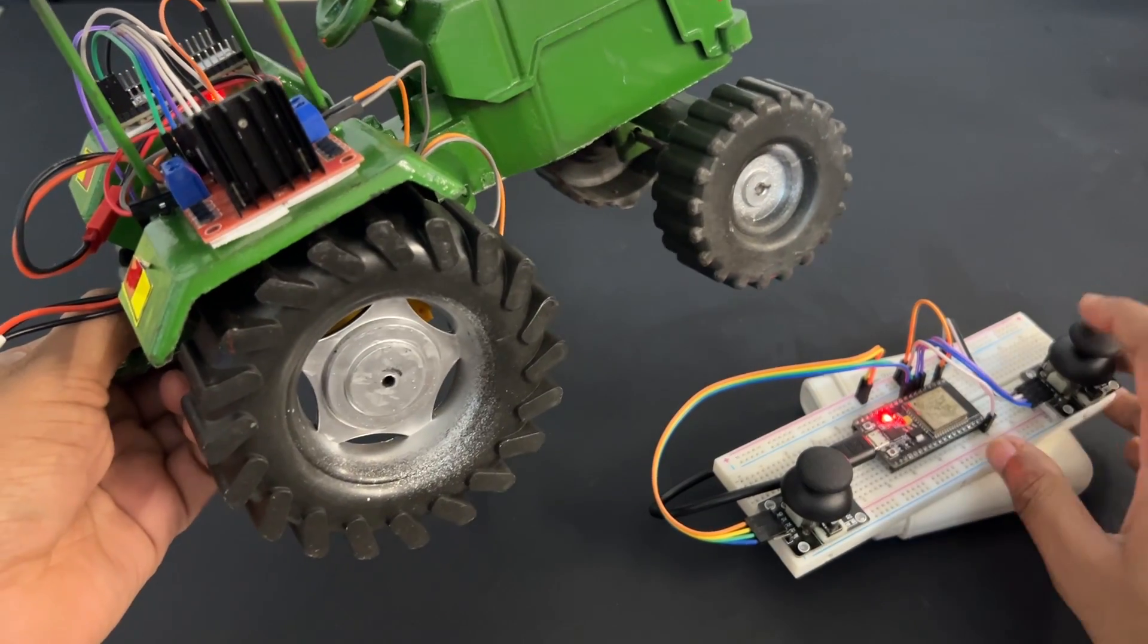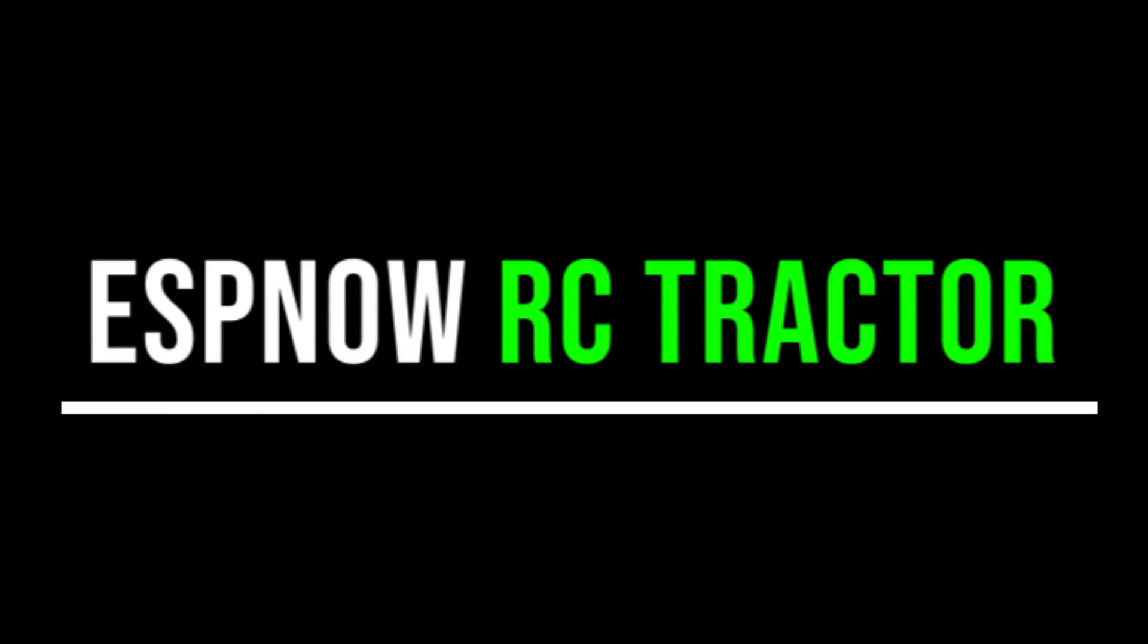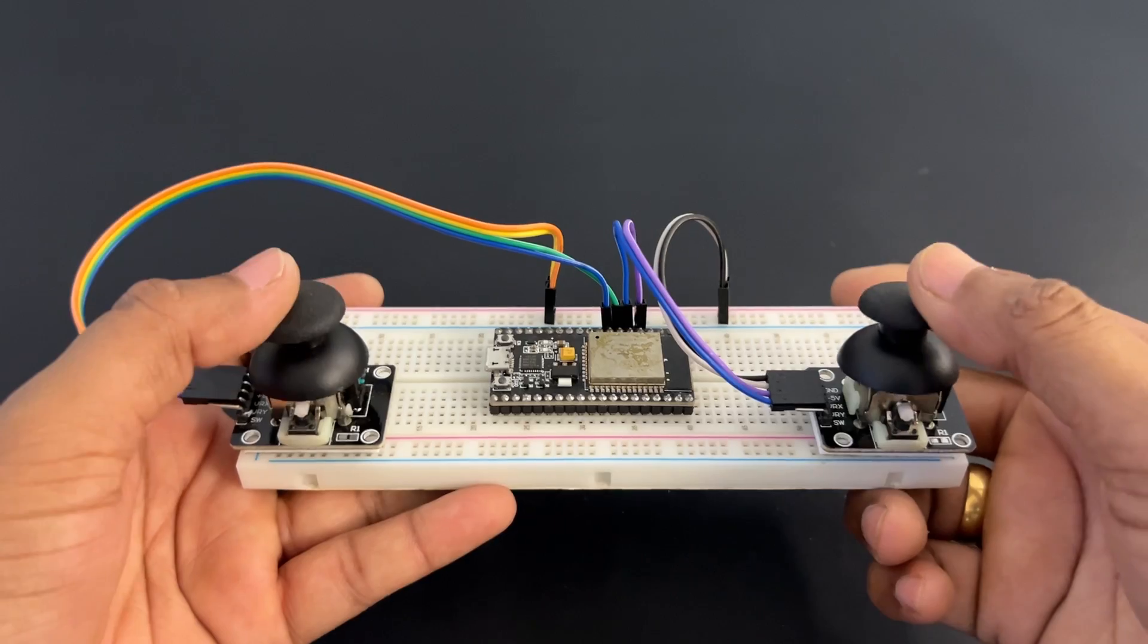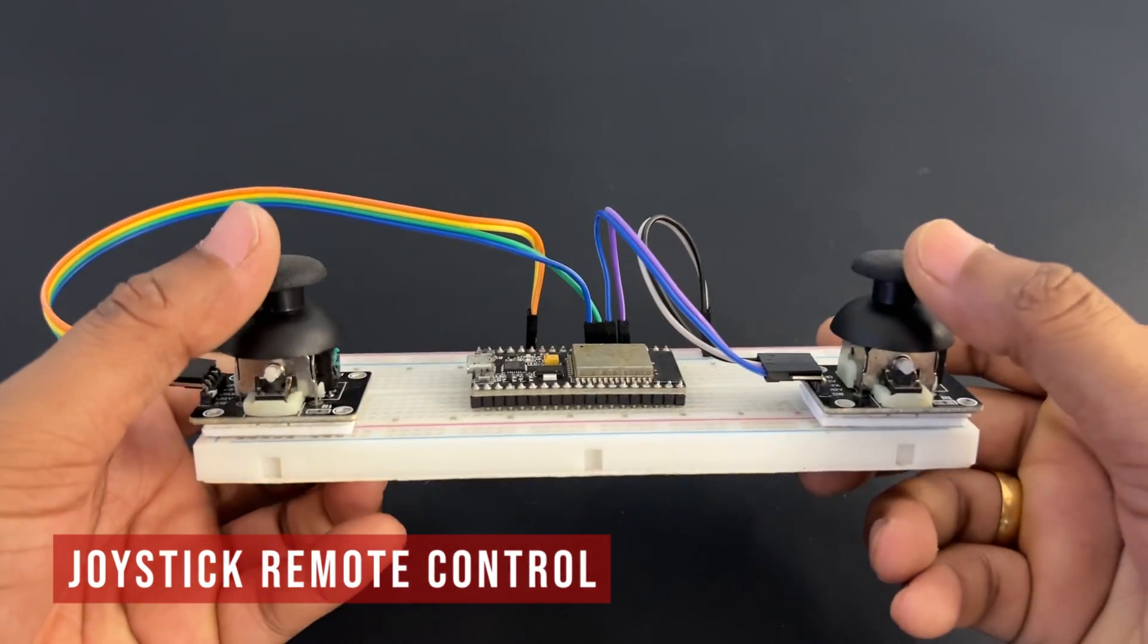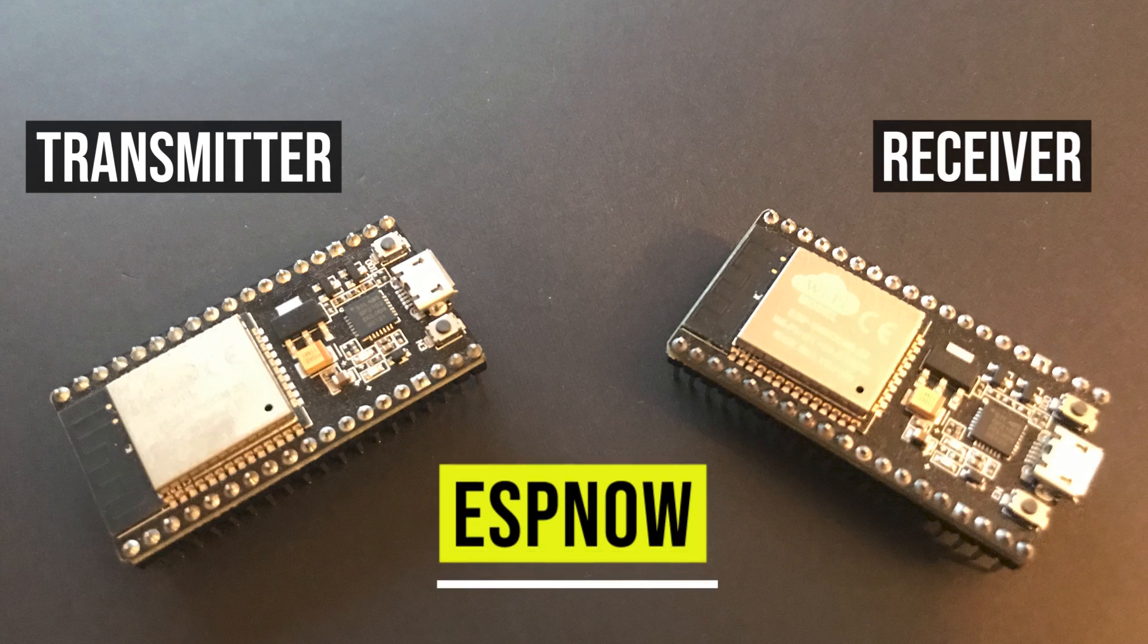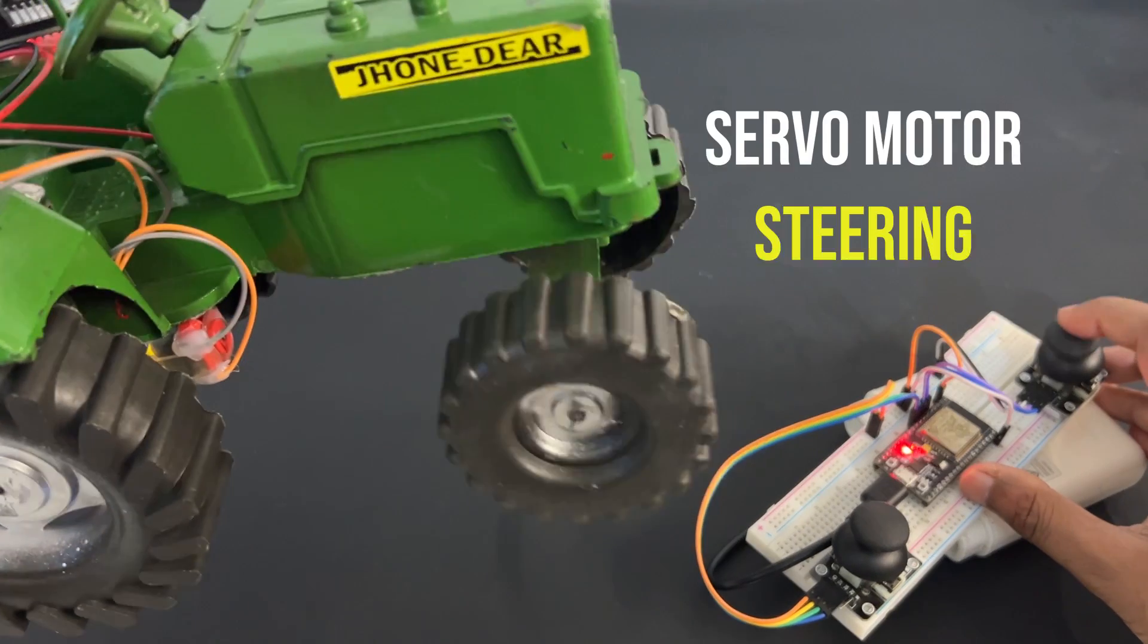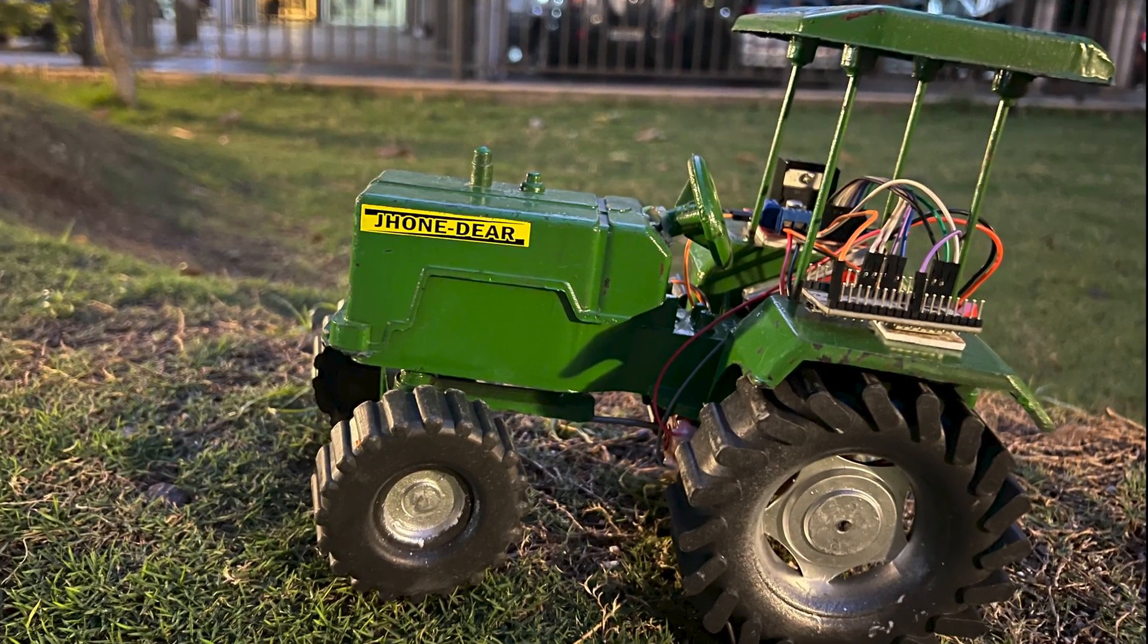Hey guys, welcome back to Hash Include Electronics with another video. In this video, we are going to make an RC Tractor using ESP32 module. We will use a transmitter created using analog joystick and ESP32 board to send tractor control commands. Transmitter and receiver ESP32 modules will communicate using ESPnow protocol. We will control the steering using servo motor. So let's get started and make this tractor. If you haven't subscribed yet, please hit subscribe button below and press bell icon to get latest updates.